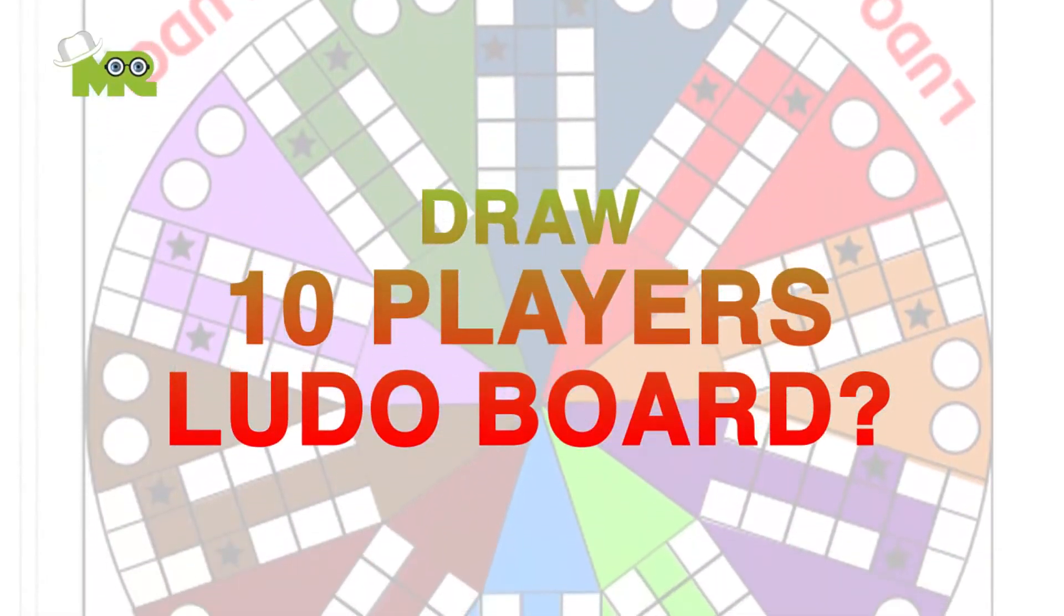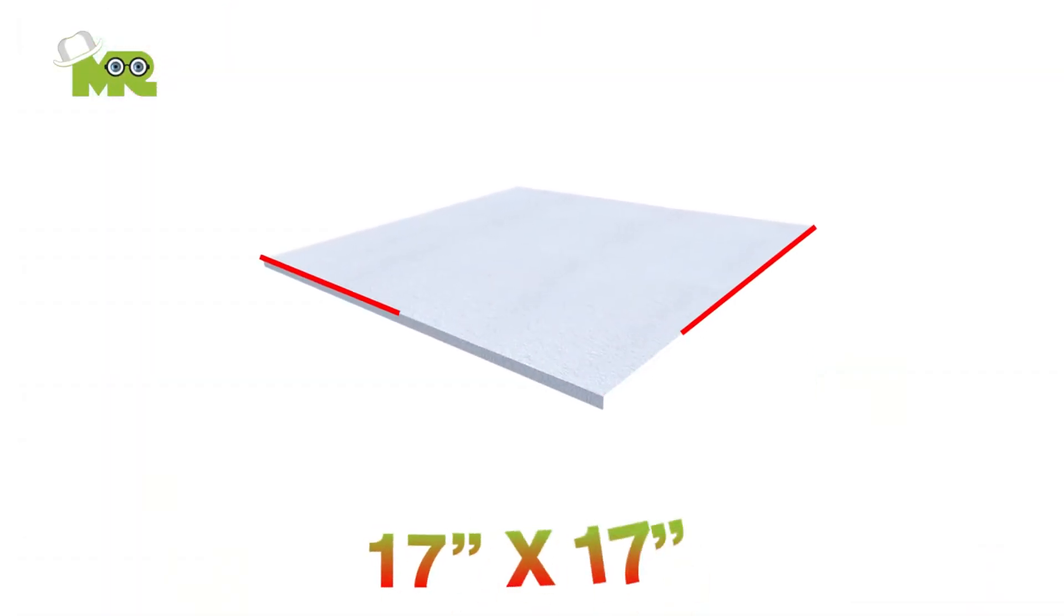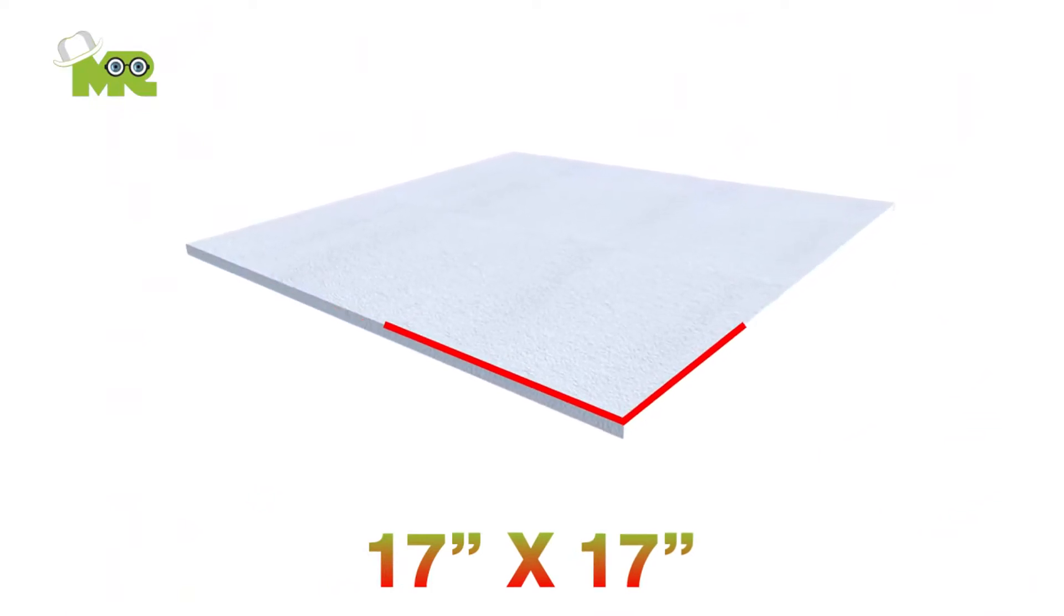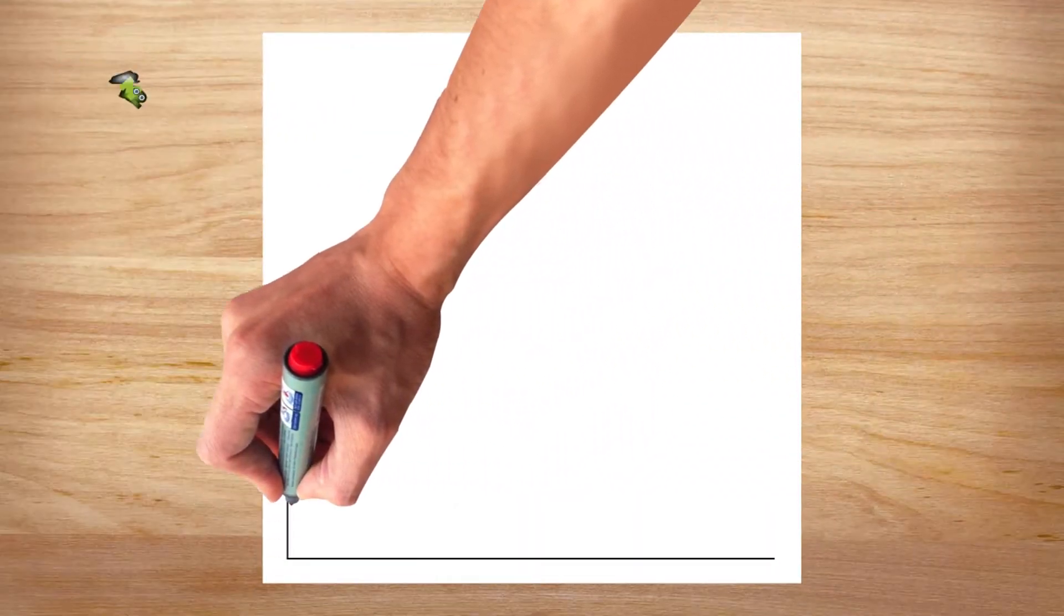Draw 10 Player's Ludo Board Game. Get a 17 by 17 inches square piece of foam board. Draw border lines on all four edges of the board with a permanent marker.